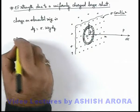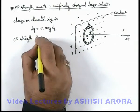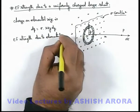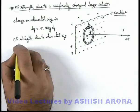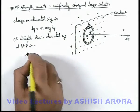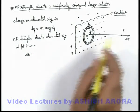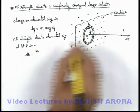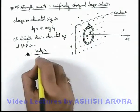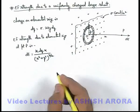So we can write the electric field strength due to the elemental ring at point P as dE, which can be given directly by the result of electric field strength due to a ring: k·dq·x divided by (x² + y²)^(3/2), since the radius of the ring is y.